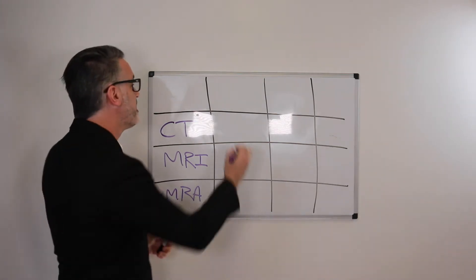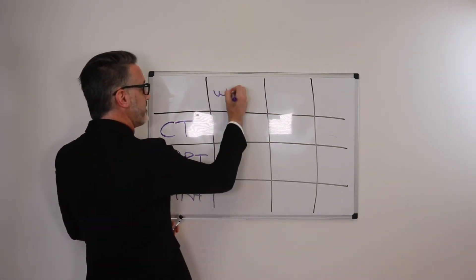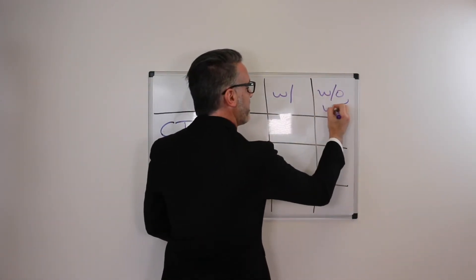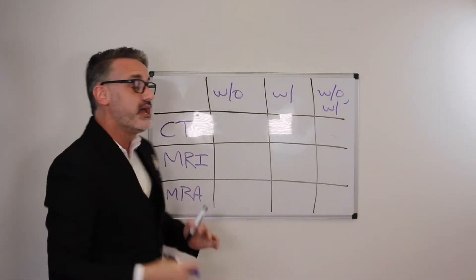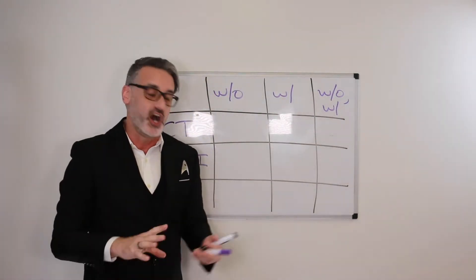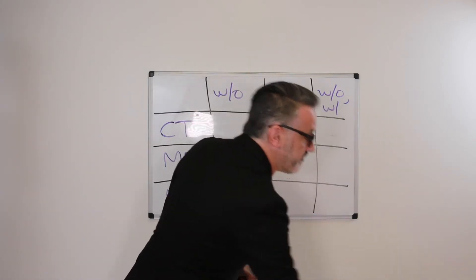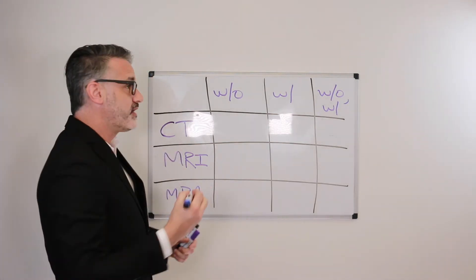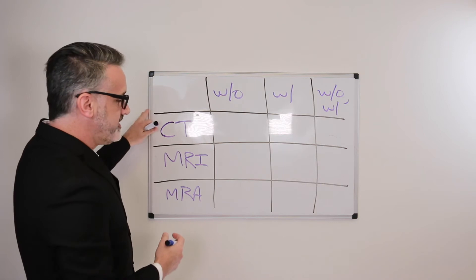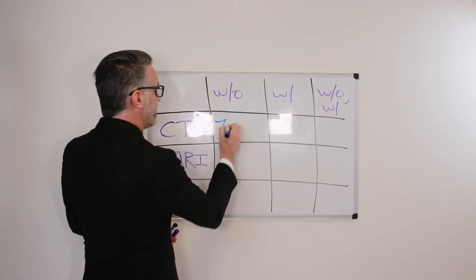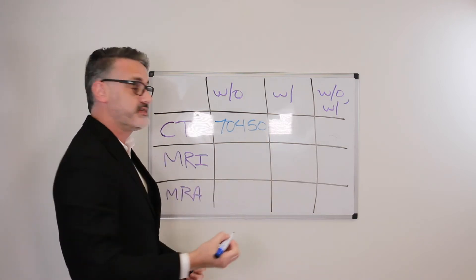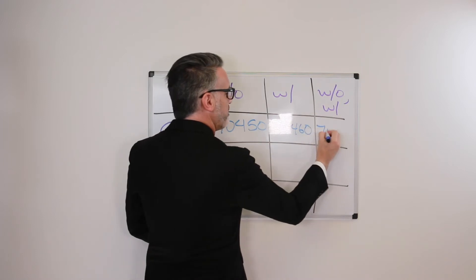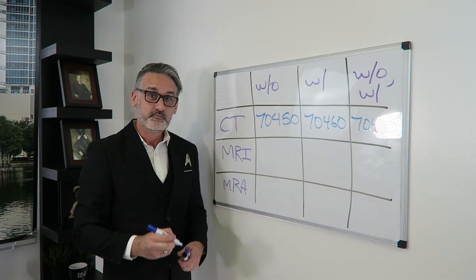And as far as the contrast, we have the options for without contrast, with contrast, then the combinations, without contrast, followed by with. And what's awesome, though, about the diagnostic radiology is all of them follow the same format. So, for example, with the CTs, and I'll just use the example of a brain CT. Every CT, no matter what the location is, has a different option for all three. So, for example, a brain CT without contrast, 70450. A brain CT with contrast, 70460. And without, followed by with, 70470.